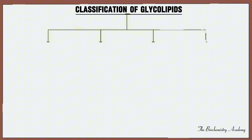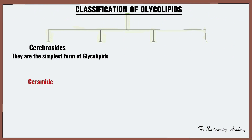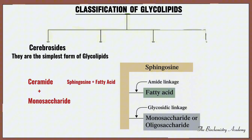Glycolipids are classified into four classes. The first among them is cerebrosides — they are the most simple form of glycolipids. A cerebroside is made up of a ceramide and a monosaccharide. A ceramide is a sphingosine attached to a fatty acid.